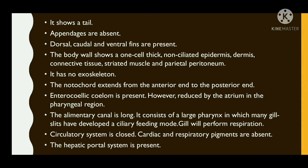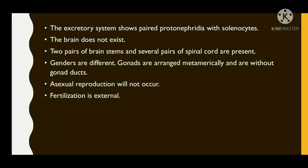The circulatory system is closed; cardiac and respiratory pigments are absent. The hepatic portal system is present. The excretory system consists of paired protonephridia with solenocytes. The brain doesn't exist; two pairs of brain stems and several pairs of spinal nerves are present. Sexes are different; gonads are arranged metamerically and are without gonad ducts. Asexual reproduction does not occur; fertilization is external.